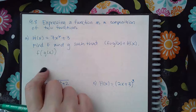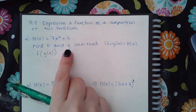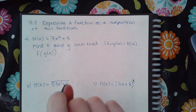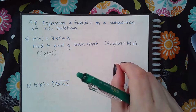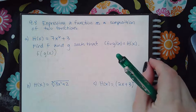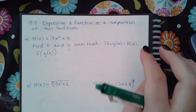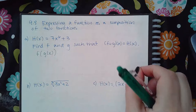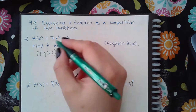The only rule for this section is you cannot let f of x or g of x be the variable x all by itself. If you say that f of x is x all by itself, or that g of x is x by itself, then you've done it wrong and the computer will mark it incorrect. So f of x and g of x each have to be something other than just x.